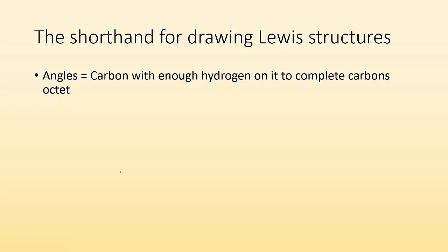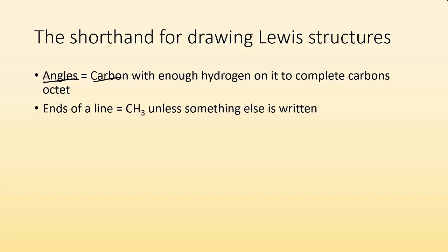How's it going ladies and gentlemen, this is John here. This time I'm going to show you guys a little shortcut — the shorthand for drawing Lewis structures. Basically, what you need to know is that any time there's an angle, that is a carbon with enough hydrogens on it to complete the carbon's octet. Ends of lines mean that there's a CH3, unless something else is written.